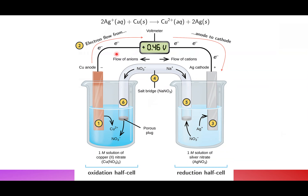We'll start here with the general electrochemical cell. We have copper in a solution of copper nitrate — a metal suspended in solution with its ions. This is a typical half-cell, set up in a one molar solution of copper(II) nitrate.